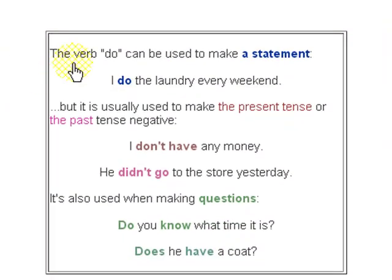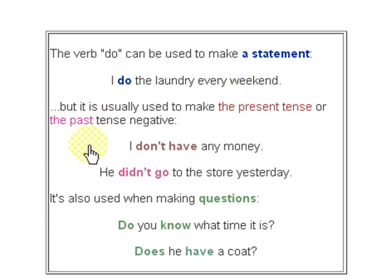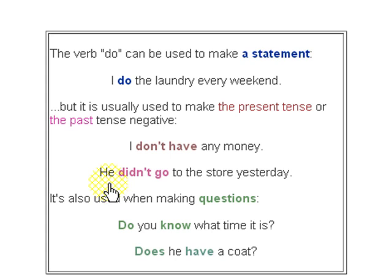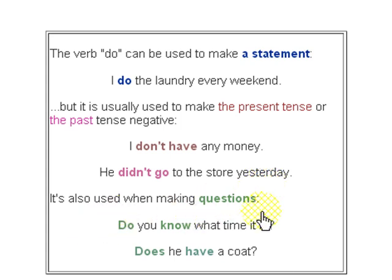The verb 'do' can be used to make a statement, like 'I do the laundry every weekend,' but it's usually used to make the present tense or the past tense negative. For example: 'I don't have any money,' 'He didn't go to the store yesterday.' It's also used when making questions: 'Do you know what time it is?' 'Does he have a coat?'